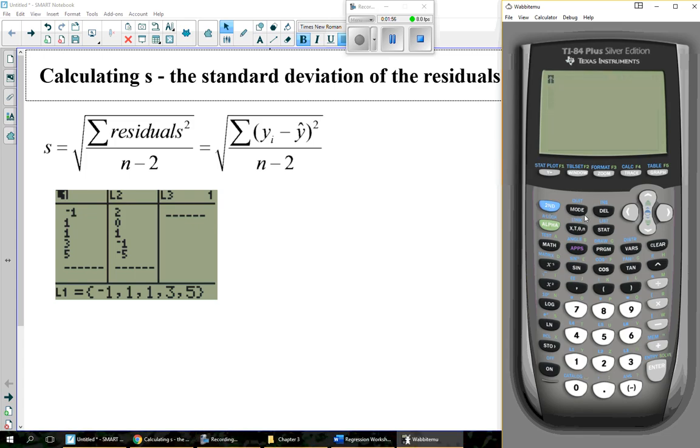Now I need to add them up. So second list, math, number 5, add up L4. This is a two-variable problem, so the degrees of freedom are n minus 2. Which means I've got 1, 2, 3,